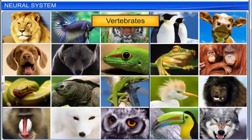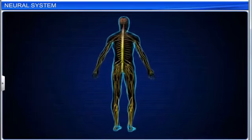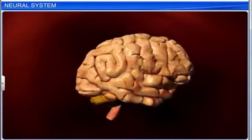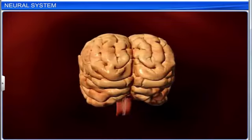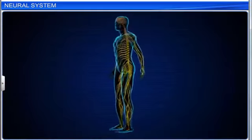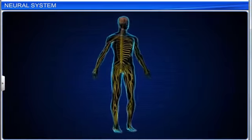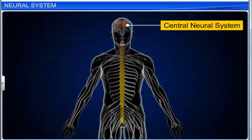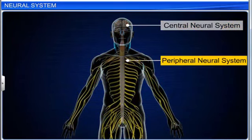All vertebrates have a well-developed neural system. However, the brain is the most complex and advanced in the primates, especially in human beings. Here, we'll discuss the human neural system in detail. The human neural system is divided into two parts: the central neural system, or CNS, and the peripheral neural system, or PNS.